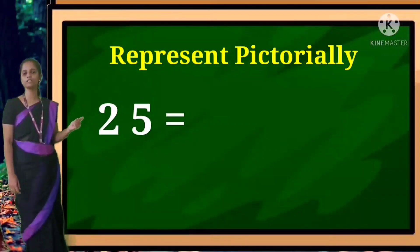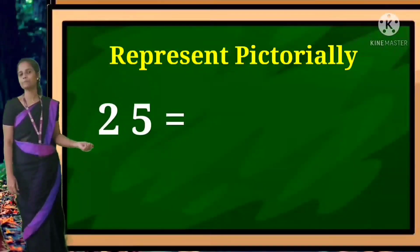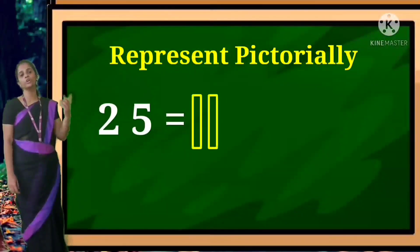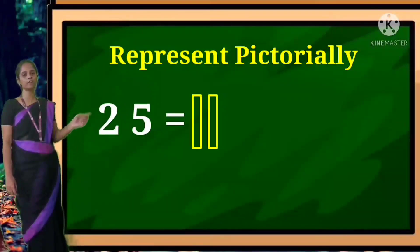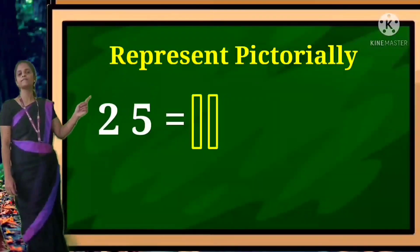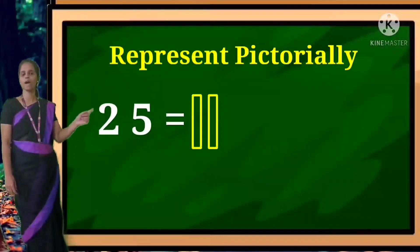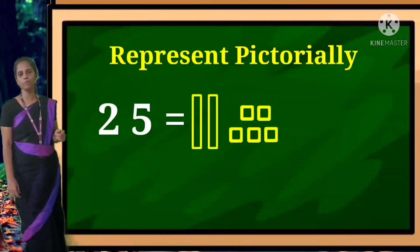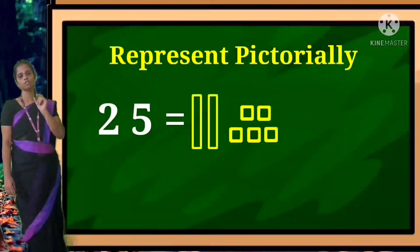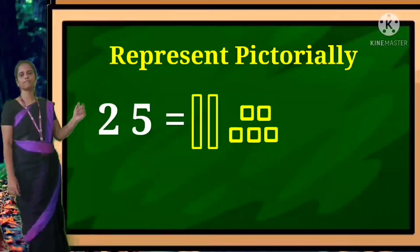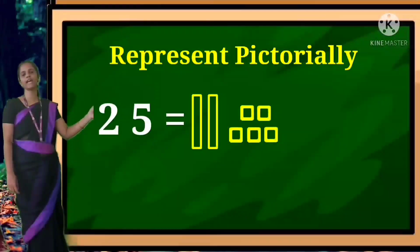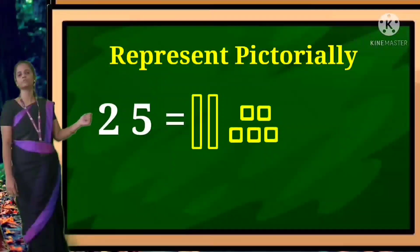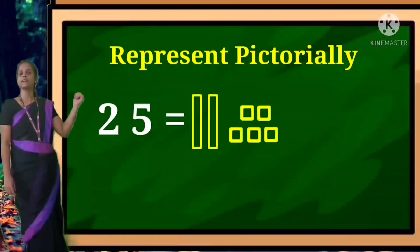So how many boxes should you draw? No big box. Two is in tens place, so draw two thin strip boxes. Five is in ones place, so draw five small boxes. So twenty-five.